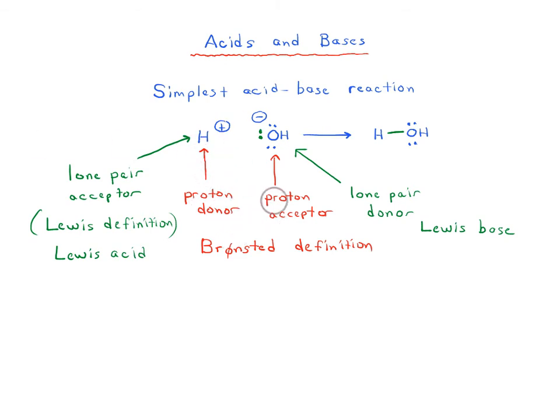So previously, this is a proton donor, and this is a proton acceptor. Instead of looking at the proton, you can look at the H+ as an acceptor of a lone pair. You can accept a lone pair from our OH- here. And the OH- similarly can donate a lone pair to the H+. And so this is a different definition of acidity and basicity. These are known as Lewis acids and Lewis bases.